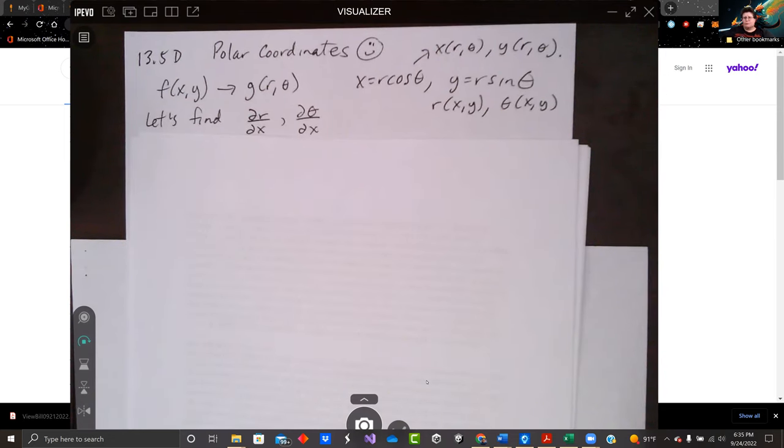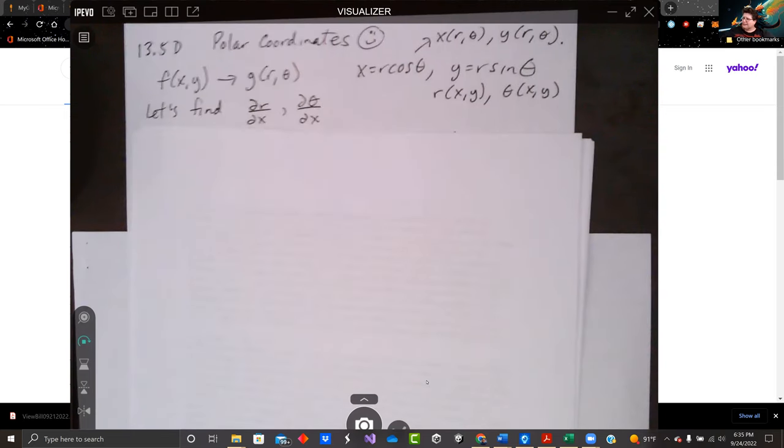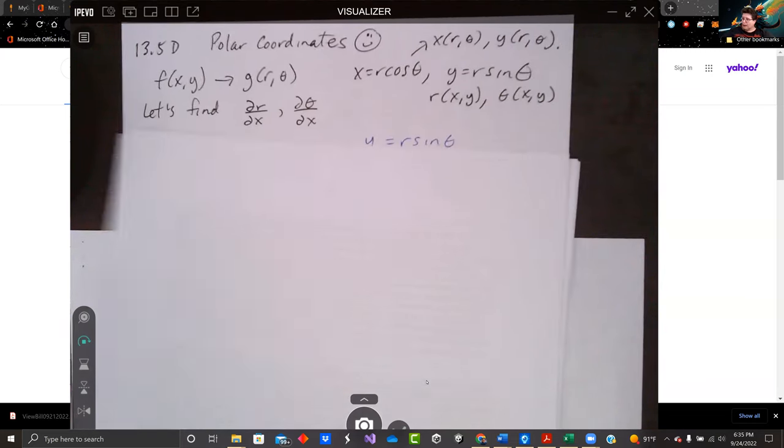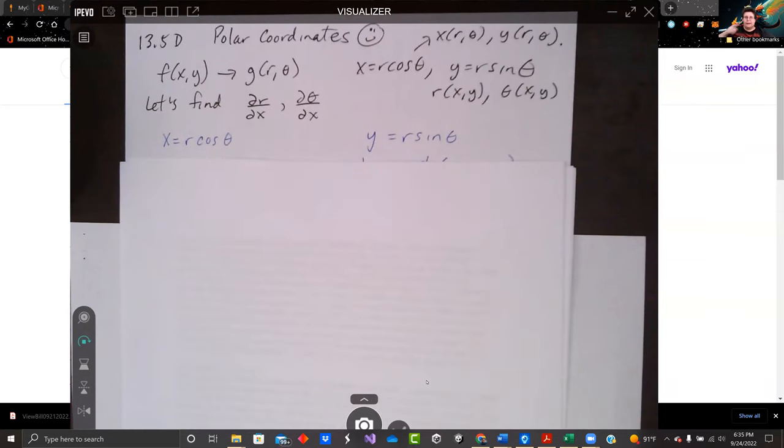So I'm just focusing on doing one part right now. Let's find the partial of r with respect to x and the partial of theta with respect to x. And I didn't do the y's. So let's just start with what we got. x equals r cosine theta, y equals r sine theta. And we're going to take our derivatives here.